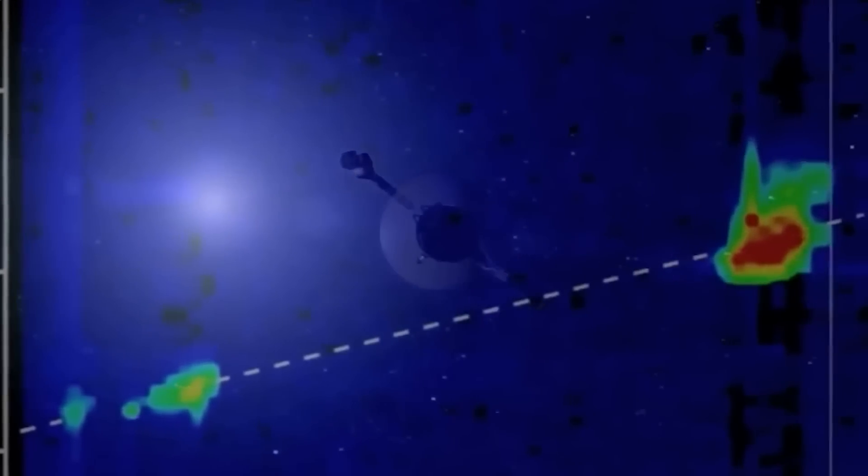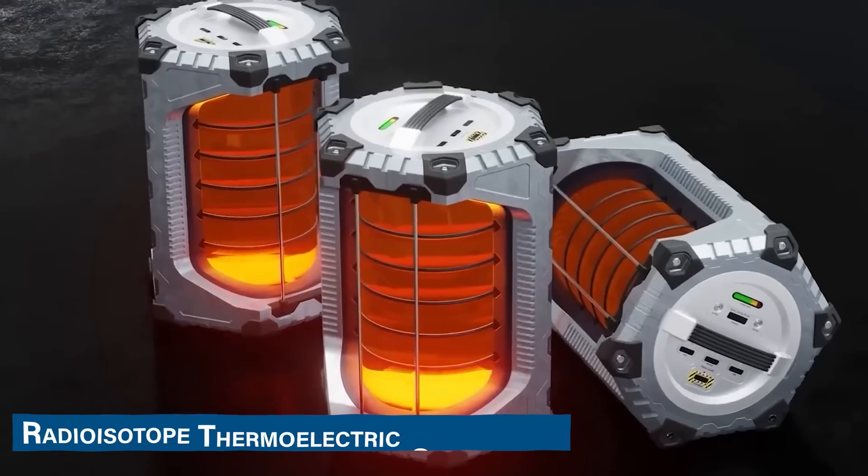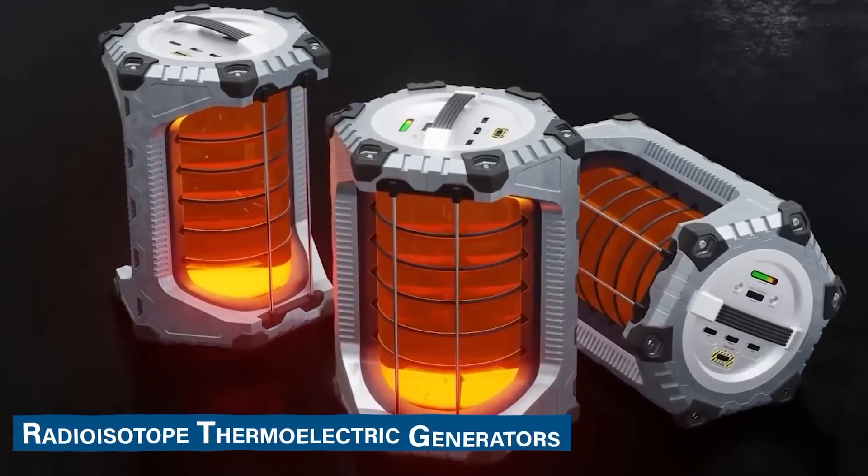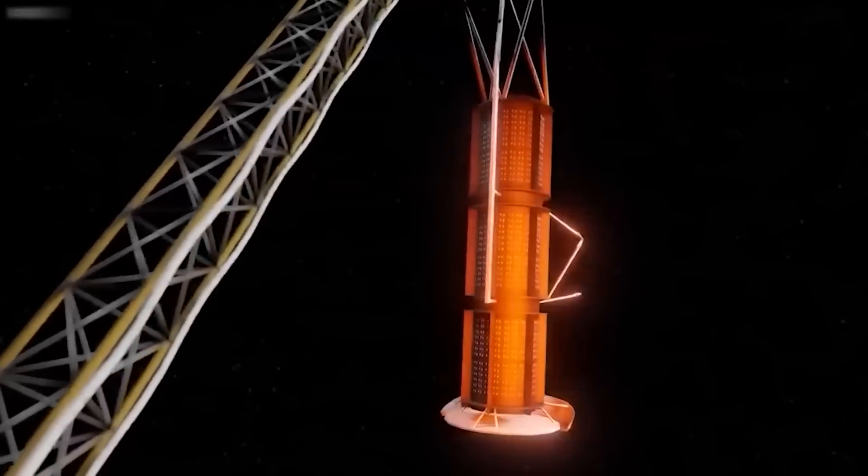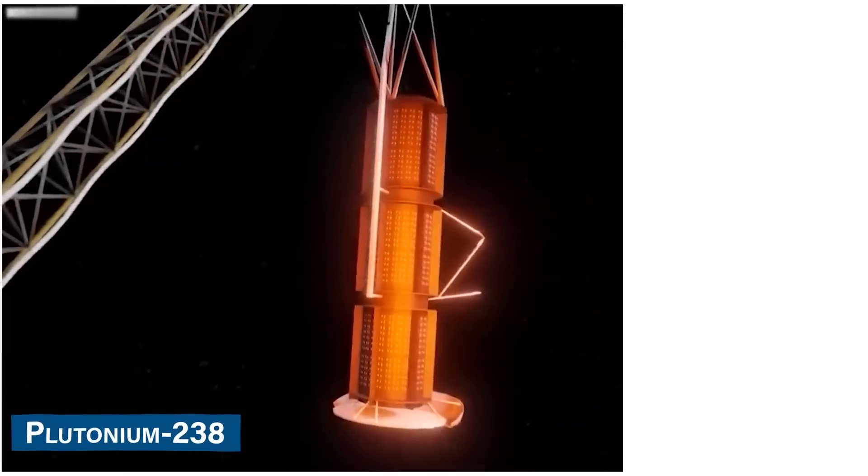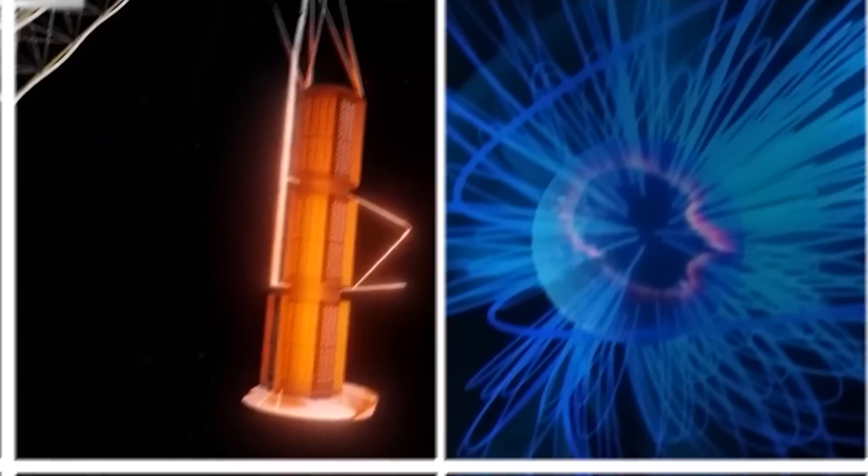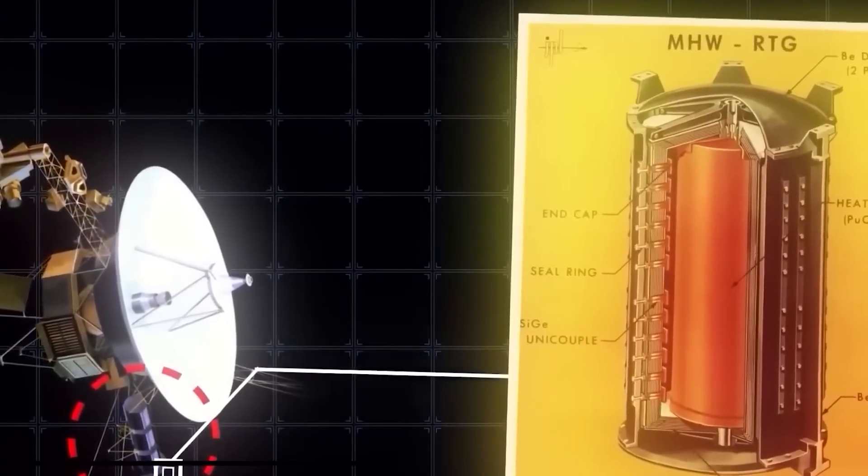However, this achievement came with its fair share of challenges. As Voyager 1 ventured farther away from the sun, the amount of available sunlight to power its instruments and systems gradually diminished. The spacecraft primarily relies on three radioisotope thermoelectric generators to convert the heat produced by the natural decay of plutonium-238 into electricity.